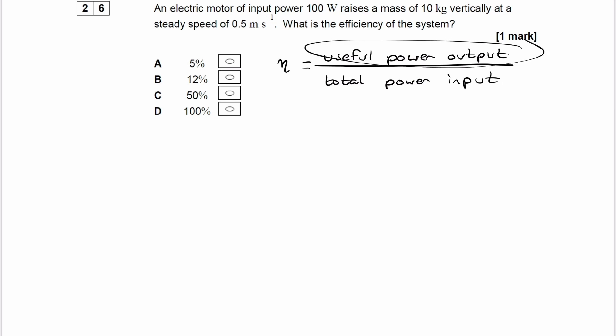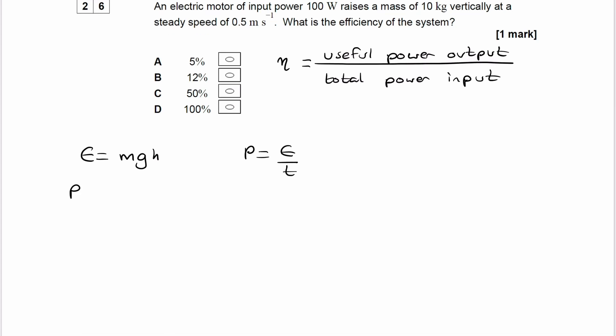But we want power output. Well, let's first think about gravitational potential energy. So that's equal to mgh. Power is equal to work done over time or energy over time. So then the useful power output would be the energy given to gravitational potential energy per second. So that would be e divided by t or mgh over t.